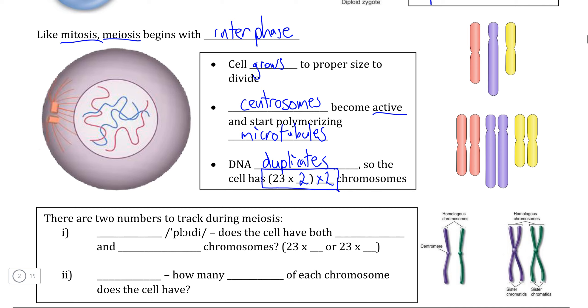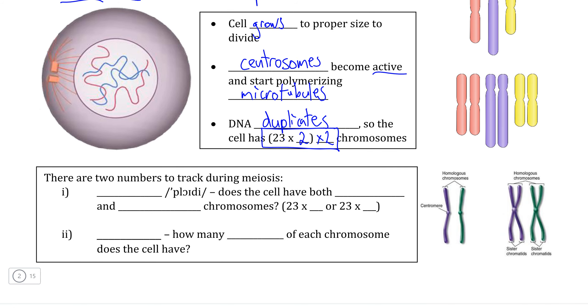This right here is easily the most confusing part when discussing the production of gametes. So let's talk exactly about what these two numbers actually mean. Firstly, when we say 23 times 2, what we are referring to is the concept of ploidy, whether the cell contains both the maternal chromosomes, the chromosomes from your mother, and the paternal chromosomes, the chromosomes from your father.